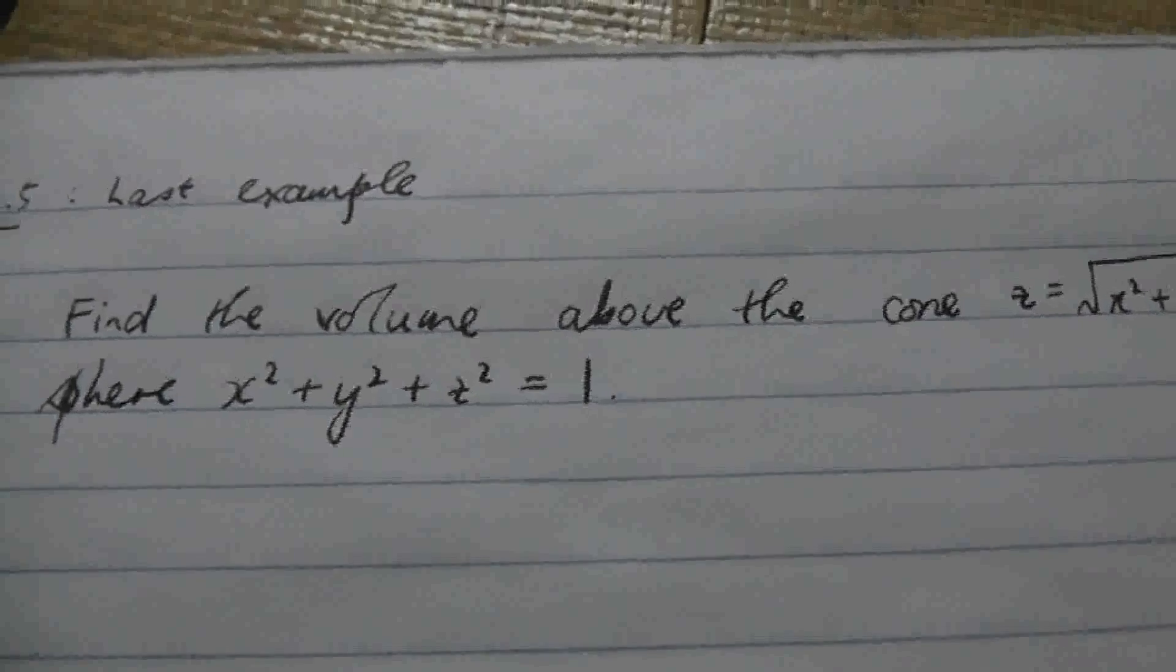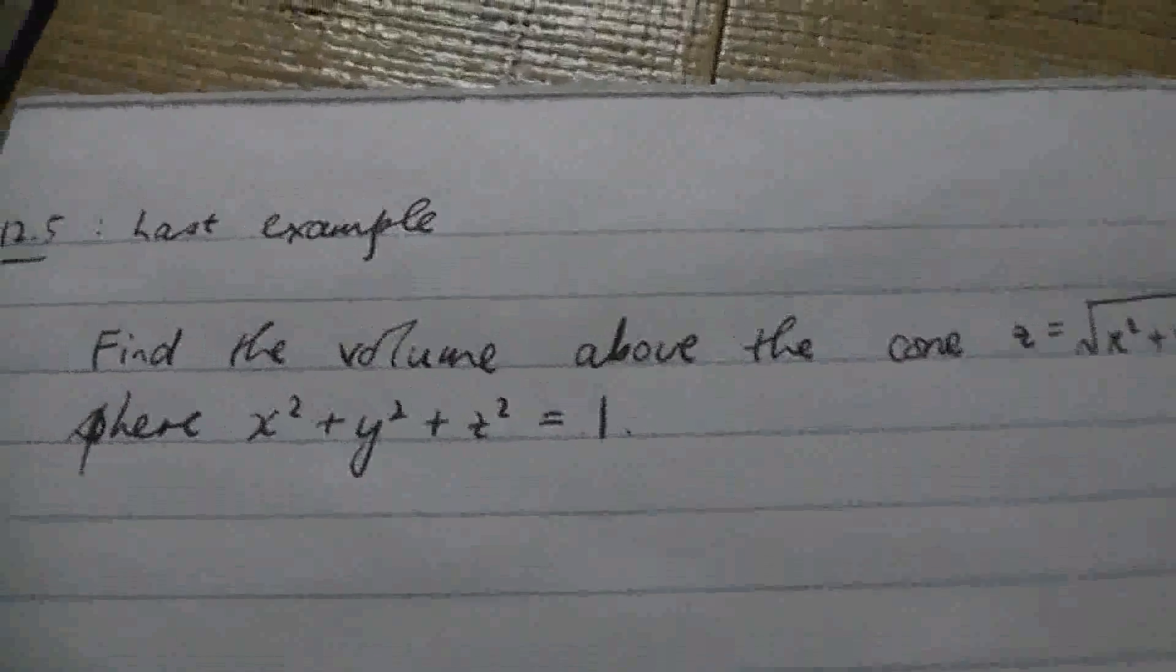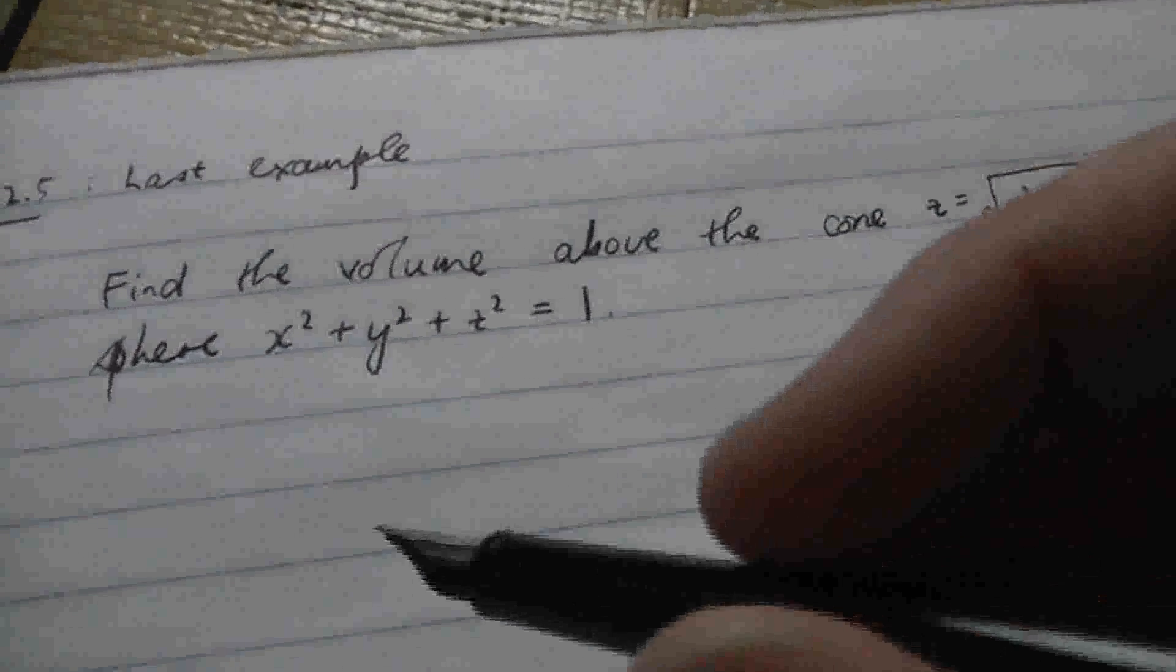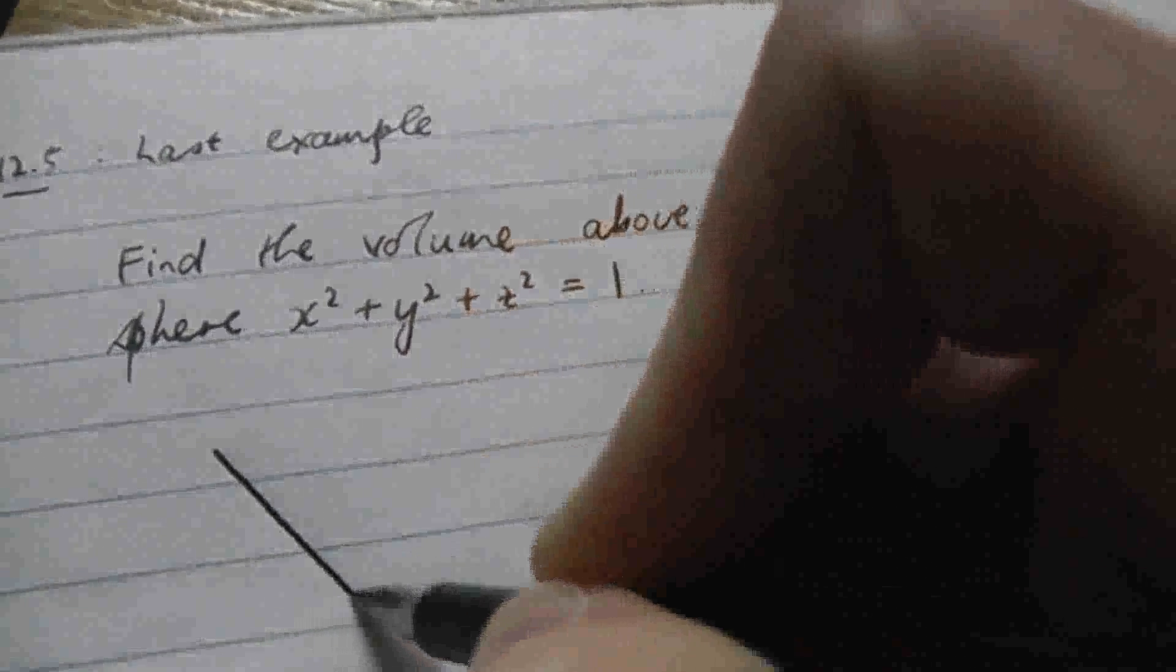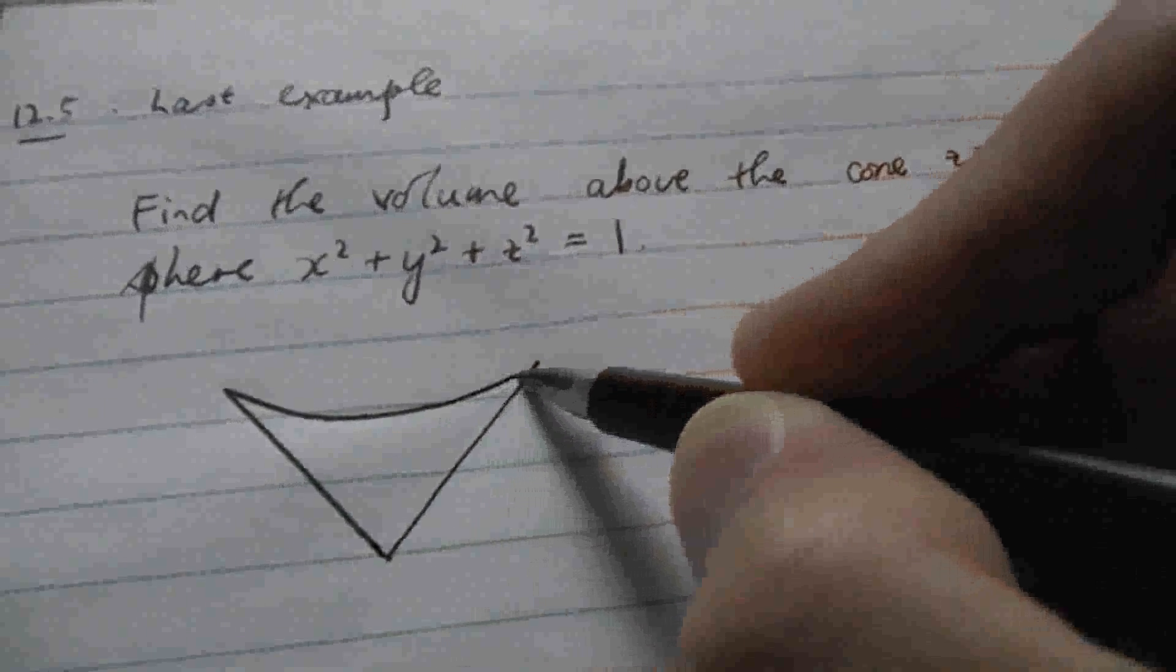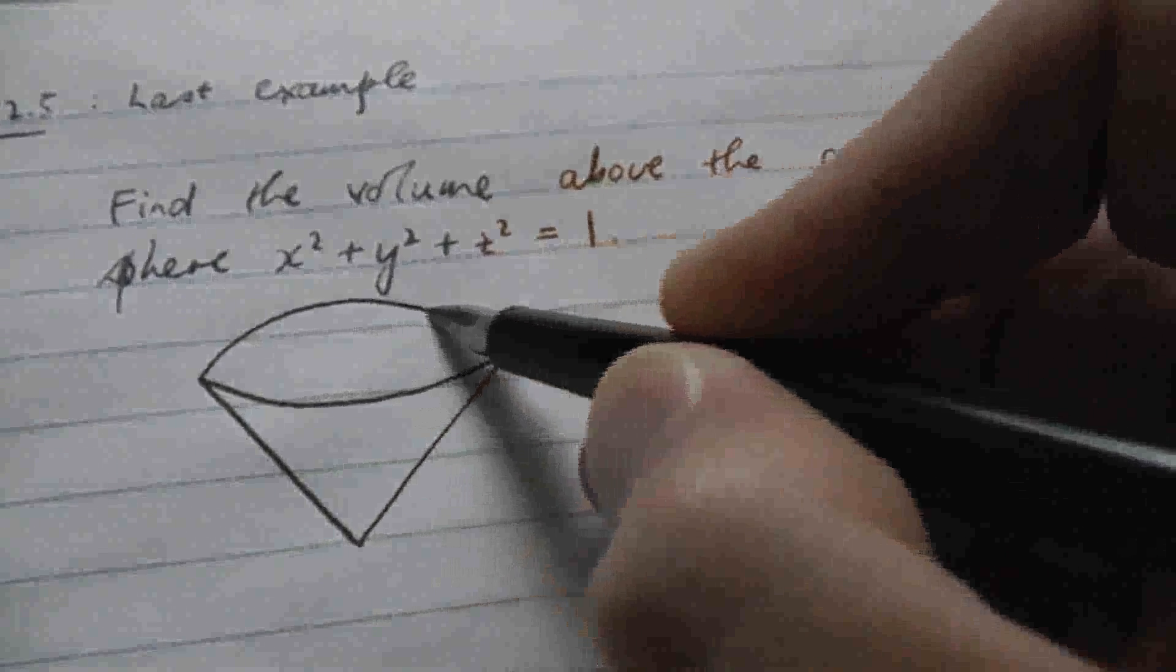So we're going to be computing the volume as an integral, and in order to do this, first of all we should have some idea of what the sketch looks like. So we have a cone like this and it's capped by the top part of a sphere. So this thing kind of looks like an ice cream cone.